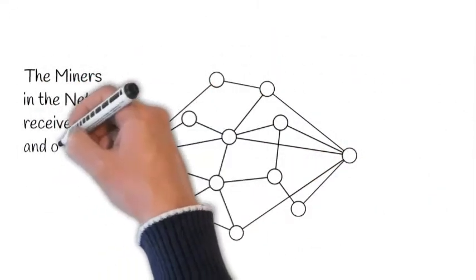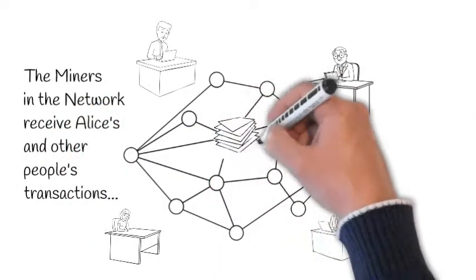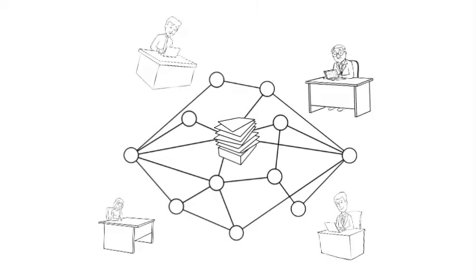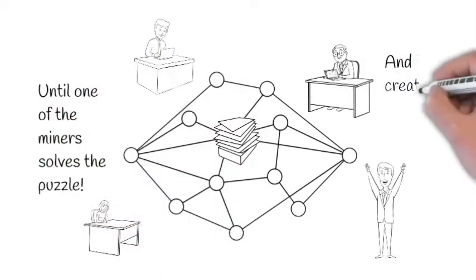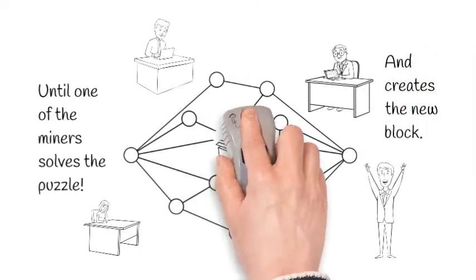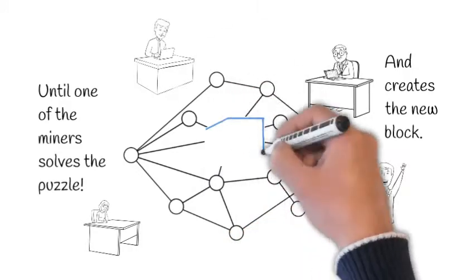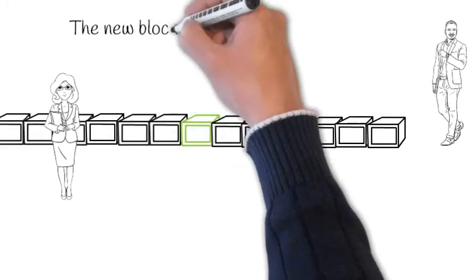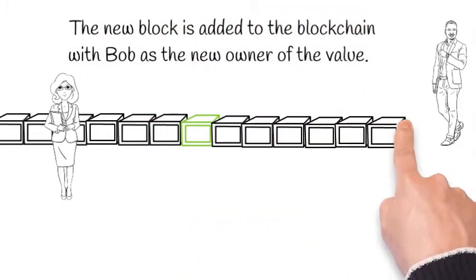The miners in the network will receive Alice's and other people's transactions, and then they will begin to solve the proof-of-work puzzle until one of the miners solves the puzzle and creates the new block. The new block will be added to the blockchain with Bob as the new owner of the value.